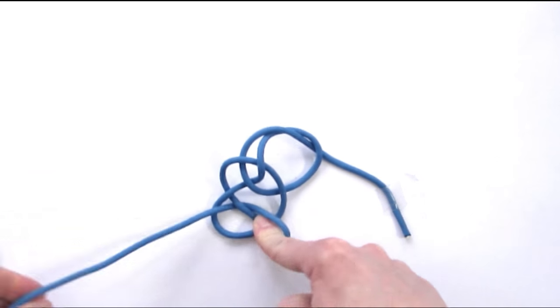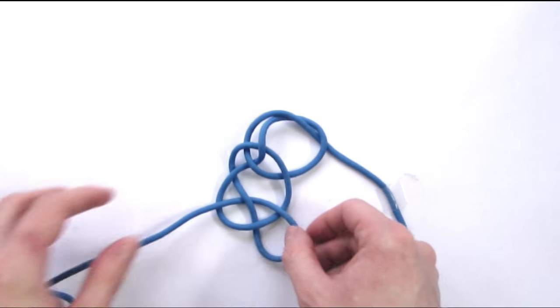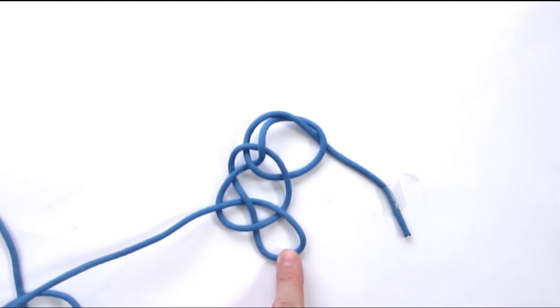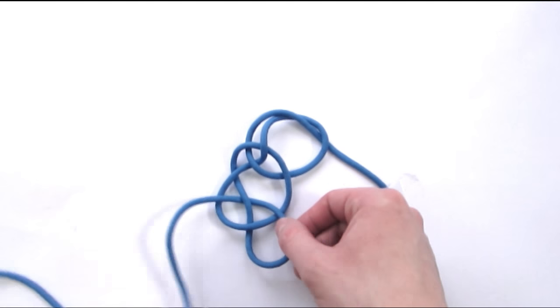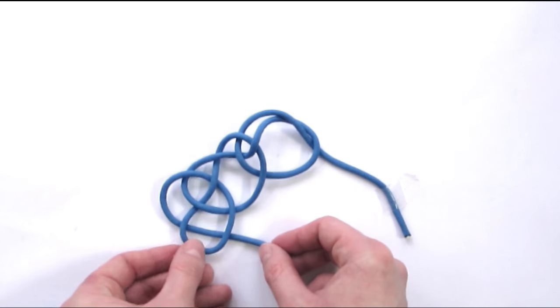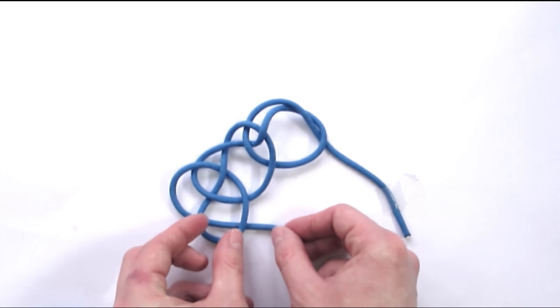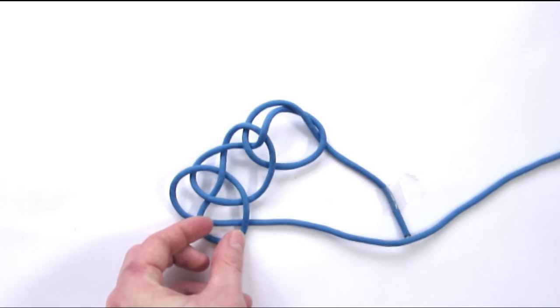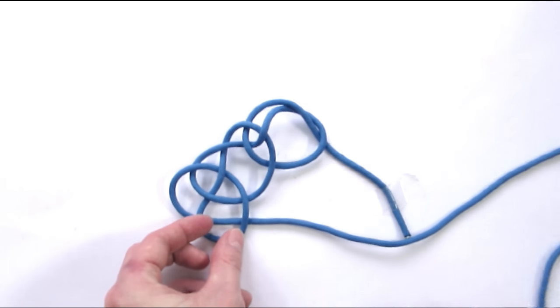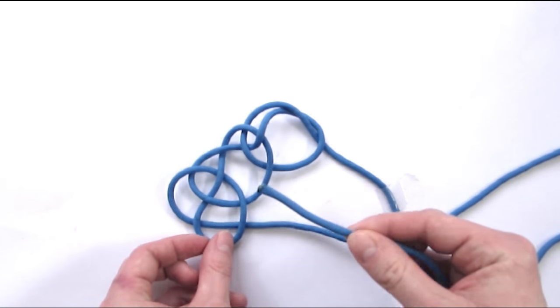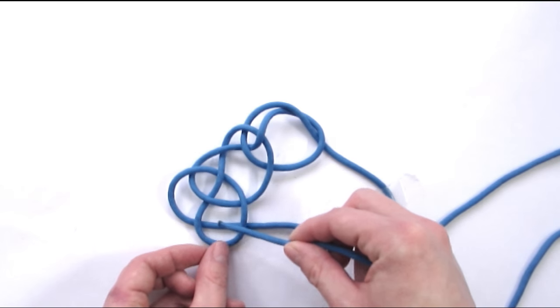We're going to make six in this tutorial, so again, place your working end under this loop, under two. Then take your working end and go over, under, over.